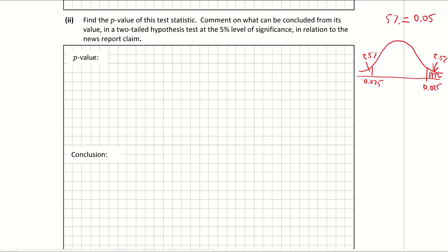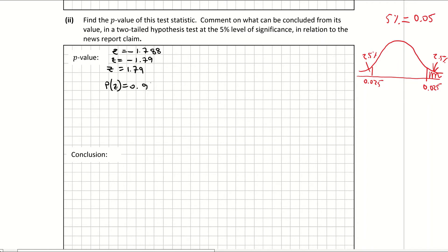Working out my p-value: from the first part we got a Z score of negative 1.788, and going to two decimals that gives me negative 1.79. Looking that up in my log tables — it only does positive, so I'm going to find the probability of positive 1.79, which gives me the probability of 0.9633. Again, I take that away from 1 because we are looking for negative 1.79, not positive.